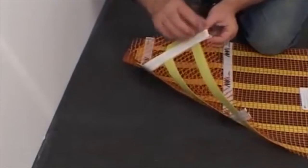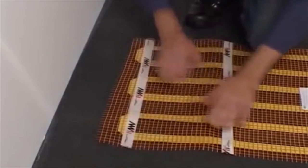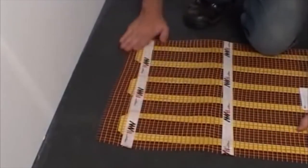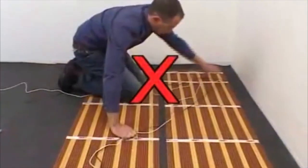Using the double-sided adhesive tape on each mat, stretch the mats and secure them to the floor. Make sure each mat is completely flat. Place the cold leads between the mats, ensuring they do not cross over them.